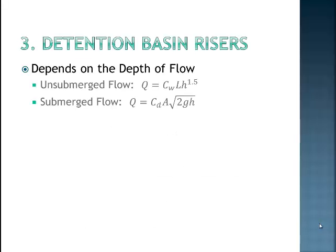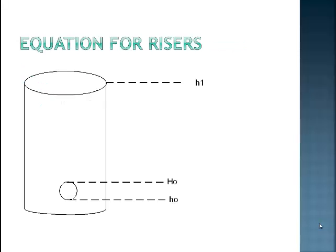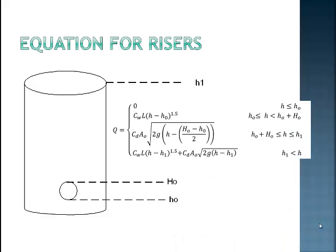Next, let's talk about a detention basin riser. Risers are the structures which allow flow to leave a reservoir. The equations for the risers are based on both unsubmerged flow, which is the weir equation, and submerged flow, which is the orifice equation. So let's look at this particular riser, where you have a circular opening that's located little h0 from the bottom of the basin and goes all the way to big H0. The top of the riser is H1. The equations are quite interesting. The flow is equal to 0 when the flow depth within the reservoir is less than or equal to H0. As soon as the flow is between H0 and little h0, you will follow the weir equation.